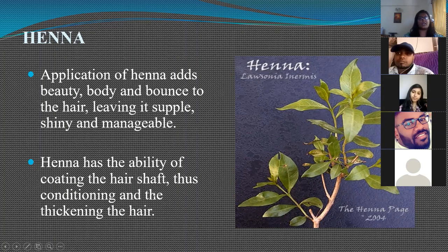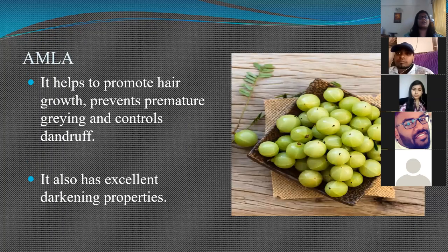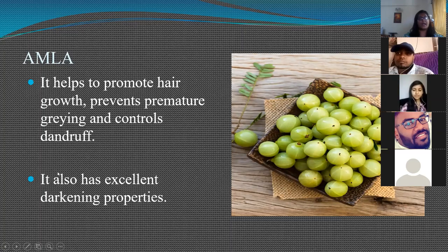Henna conditions and thickens the hair, and has properties for darkening, toning, and conditioning the hair. Amla or gooseberry prevents premature graying of the hair, controls tantrums, and has excellent darkening properties.